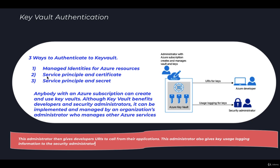The second method is service principal and certificate. You can use a service principal and the associated certificates that have access to the Key Vault, but Microsoft doesn't recommend this approach because the application or developer has to take the responsibility to rotate the certificate. In an organization with hundreds of applications and hundreds of secrets to maintain, it could be a very difficult process and lead to too many outages.